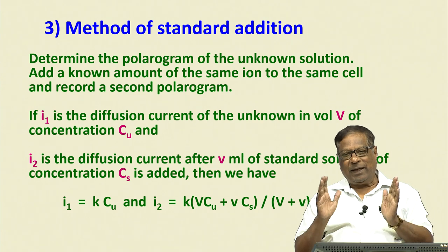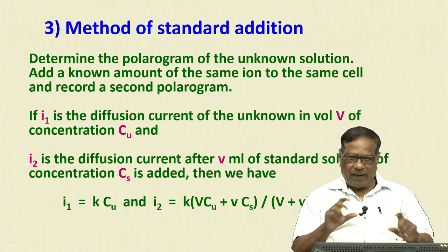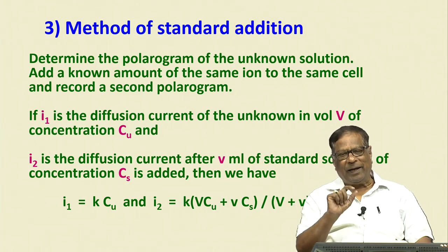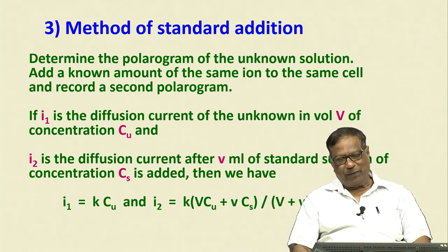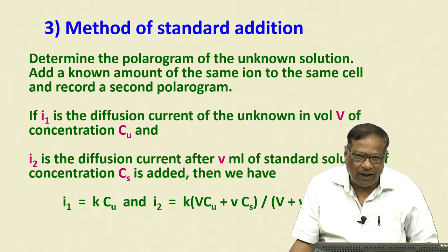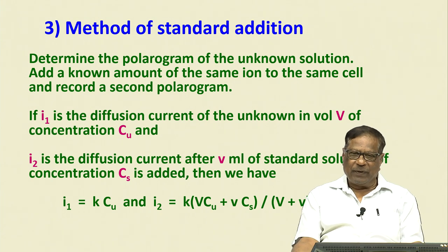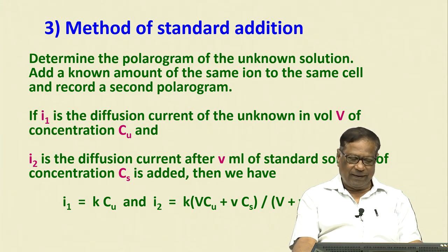The unknown is run as a polarogram first, then the same quantity of unknown in another set has a known volume of standard added to the unknown matrix and the polarogram is run again. The current from the total unknown plus known concentration is recorded. We have the total current value but do not yet know the analyte concentration.